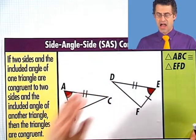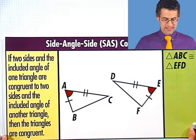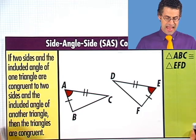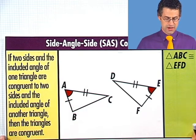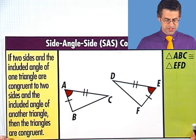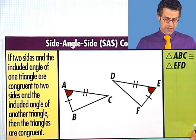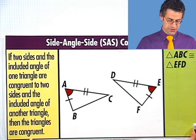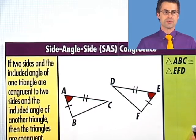Another fantastic technique to show that two triangles are congruent is the so-called side-angle-side congruence. This says that if two sides and the included angle of one triangle are congruent to two sides and the included angle of another triangle, then the triangles are congruent.